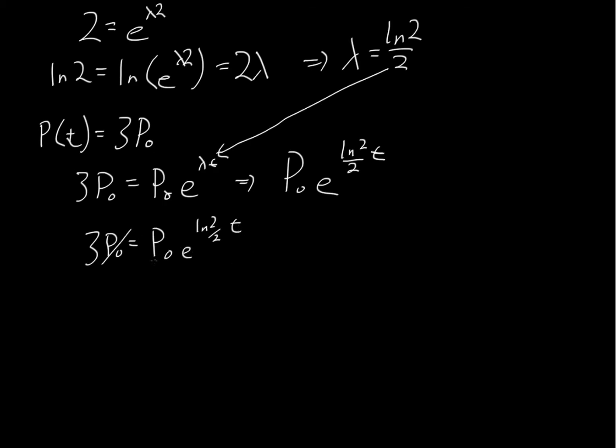Once again, our p-naughts will cancel out. So you get 3 equals e to the natural log of 2 over 2 times t. Use the same method as we did up here. By taking the natural log of both sides, in order to bring the exponential down. That'll give us the natural log of 3 equals the natural log of e to the natural log of 2 over 2 times t.